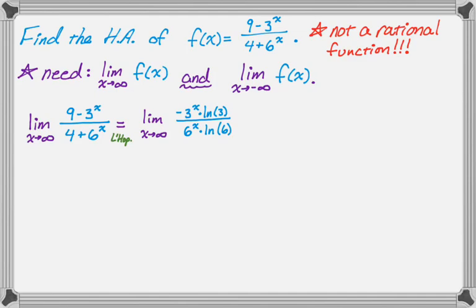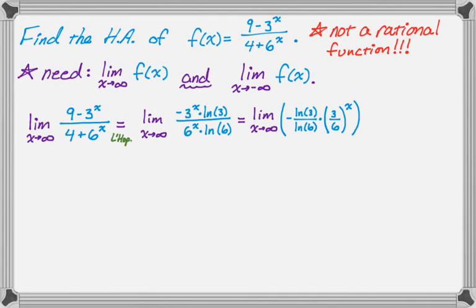This is still negative infinity over infinity, but we can work on it. Taking the constants and grouping, we get 3^x / 6^x = (3/6)^x = (1/2)^x. As x goes to infinity, (1/2)^x is like 1/2, 1/4, 1/8 — it's getting smaller, so it goes to 0. That means the whole expression goes to 0, and y = 0 is a horizontal asymptote.